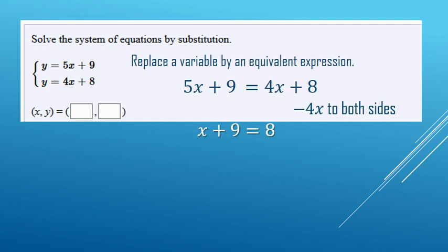Undo the plus 9 with a minus 9 to both sides. x plus 9 minus 9 is x. 8 minus 9, negative 1 is the value for x.